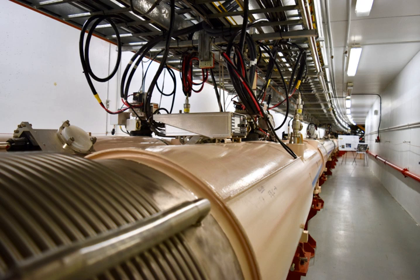The RHIC double storage ring is itself hexagonally shaped and 3834 meters long in circumference, with curved edges in which stored particles are deflected and focused by 1740 superconducting magnets using niobium-titanium conductors.